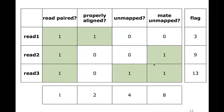For example: if a read is paired and properly aligned, you add bits 1 and 2 to get flag 3. If it's paired but not properly aligned and the mate is unmapped, you get 1 + 8 = 9. If the read is paired, unmapped, and the mate is also unmapped, you get 1 + 4 + 8 = 13. Because we're working with bits, you can always translate these flag values back into the individual binary characteristics.